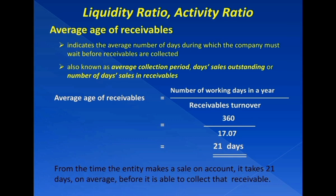The smaller the average age of receivables is, the better. Nonetheless, to make analysis of this ratio really meaningful, it must be compared with the entity's credit terms. If the average age of receivables is shorter than the credit terms, the ratio would be quite acceptable. For instance, if Elizabeth Tailoring Materials Store extends 30-day credit terms to customers, this 21-day average age of receivables may be considered positive, because it means the company is able to collect its receivables within the credit period given to customers.